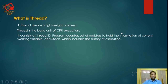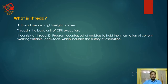A thread consists of many things like thread ID, program counter, a set of registers to hold the information of current working variables, and a stack which includes the history of execution. Thread ID is used for identifying the thread.